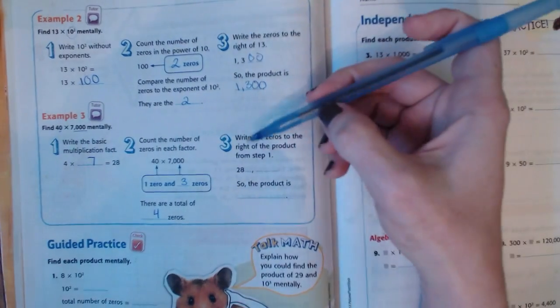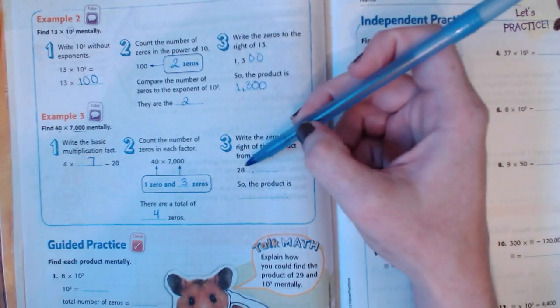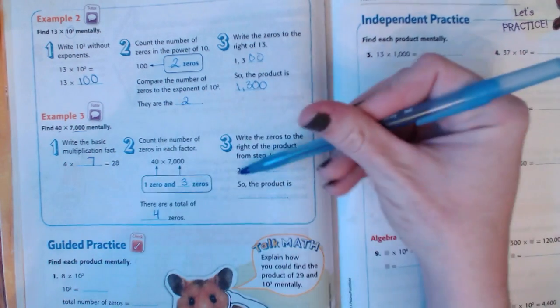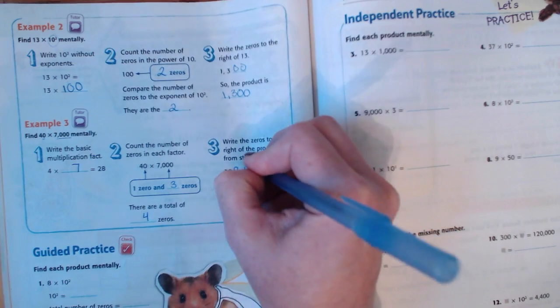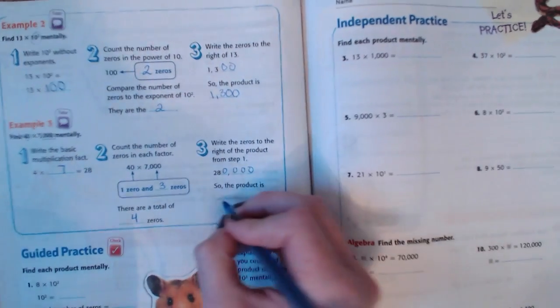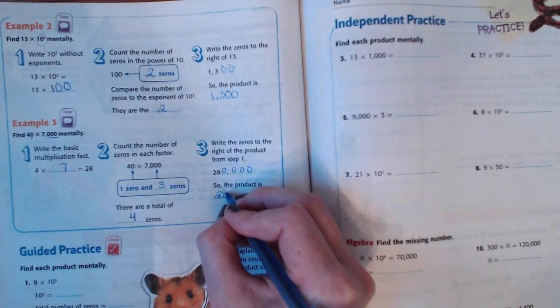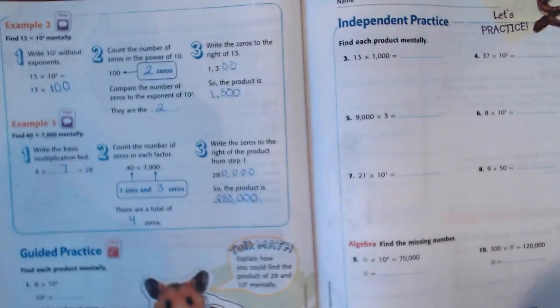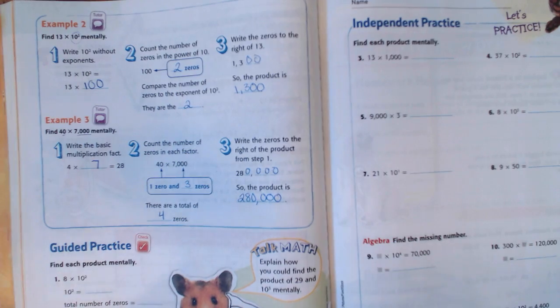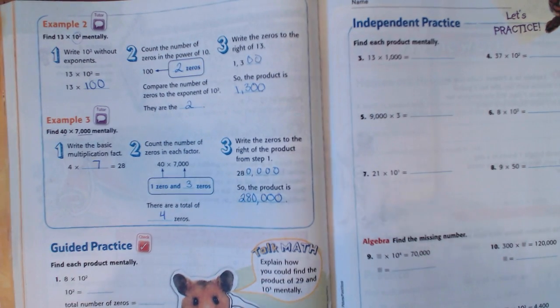So we are going to write the zeros after 28. So our product of 4 and 7 is 28. And we just add 4 zeros next to it. So you will have 280,000. Okay? Once you see that pattern and count the zeros, you'll be able to multiply anything.